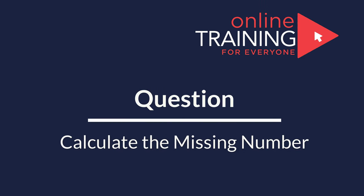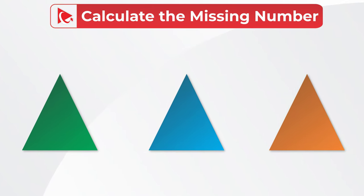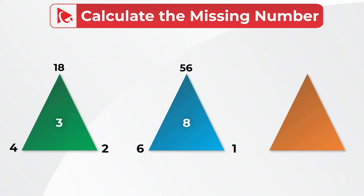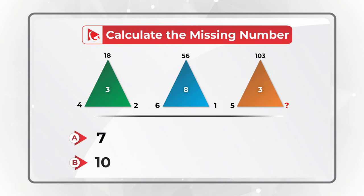Here is a very interesting question to see how quickly and effectively you can solve the challenge. You're presented with three triangles — each triangle has numbers in the corners as well as a number in the middle. The first triangle has corner numbers 4, 18, and 2, with 3 in the middle. The second triangle has outside numbers 6, 56, and 1, with 8 in the middle. The third triangle has 3 in the middle, with 5 and 103 on the outside, and a missing number in the upper right corner.